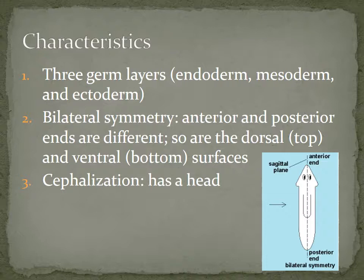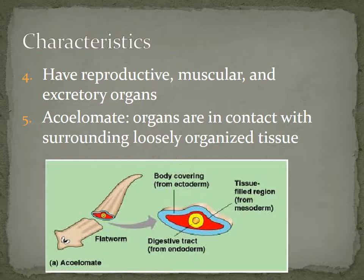You'll see that the anterior and posterior ends are different, and the dorsal and ventral surfaces are also different. They have cephalization — there's a head with some nerve tissue. They also have reproductive, muscular, and excretory organs, which is the product of having all three germ layers.